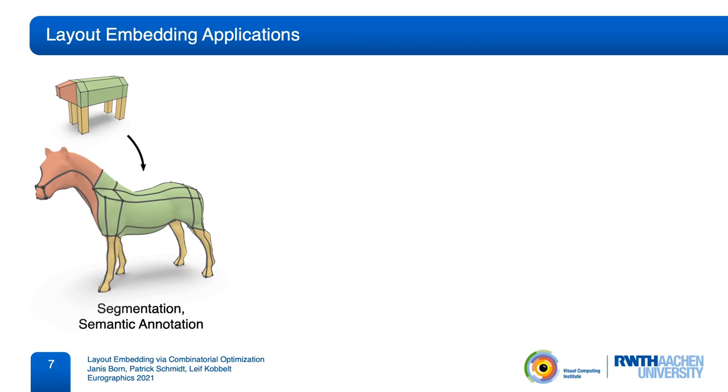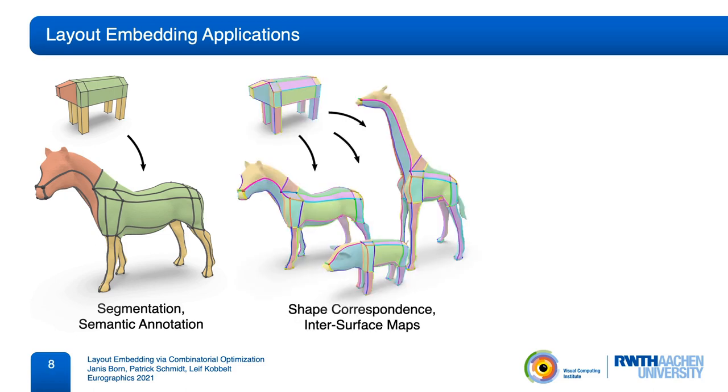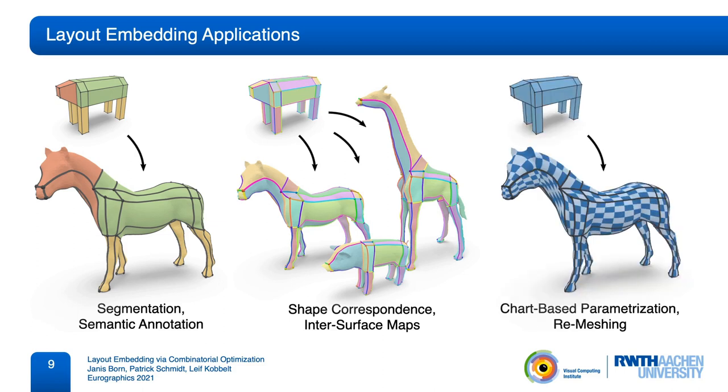For example, layout embeddings can be used for tasks like segmentation and semantic annotation, where part information from a layout template is transferred to a target shape. When working with shape collections, a layout can act as a common base domain. By embedding the same layout into different instances, we can do tasks like cross-parameterization or inter-surface mapping. Even on a single target shape, the chart-based parameterization defined by a layout embedding can be useful. For example, in the context of quad meshing, a layout can be used to define the base complex of the mesh. By prescribing a specific layout and its embedding, we can then precisely control the outcome of the remeshing.